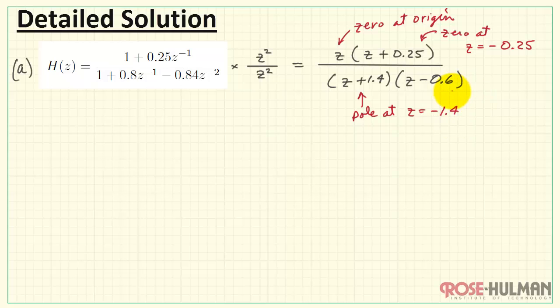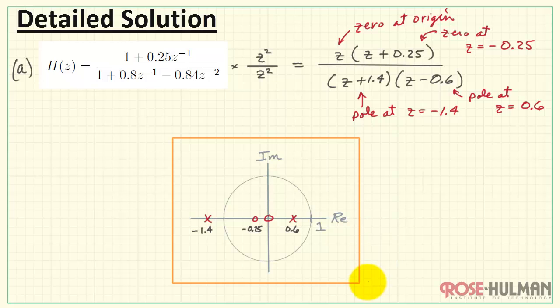Now we can identify our poles. We have a pole at z equals minus 1.4, and another one at positive 0.6. Let me sketch the real and imaginary axes for the z-plane. And then we'll place the unit circle on here for reference too. Alright, a zero at the origin. Draw a circle there. Zero at z equals minus 0.25. Looks like right there. Pole out here at minus 1.4. We'll use an x symbol for the pole. And another one at positive 0.6. And that's the result for part A. This is the pole-zero diagram for H of z.